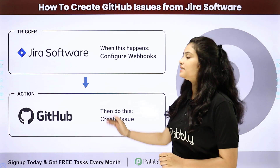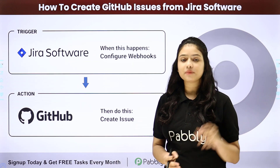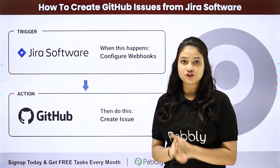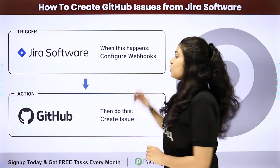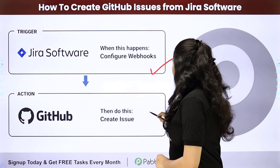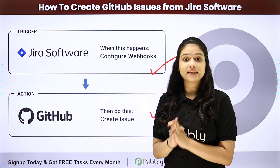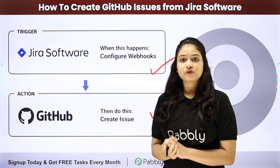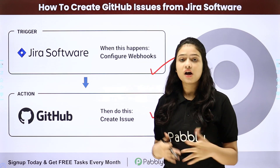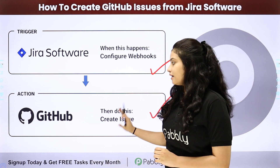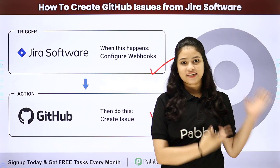For that, we will have to integrate both these applications. And because they do not have any kind of native integration between them, therefore we are going to use an automation and integration software, Pabbly Connect, to do the same. We have Jira software in our trigger and GitHub in our action. We will be connecting both of them using Pabbly Connect so that whenever a new issue is created in Jira software, automatically a new issue will also be created and added in GitHub. So to learn the full process step by step, let me take you all to my screen.